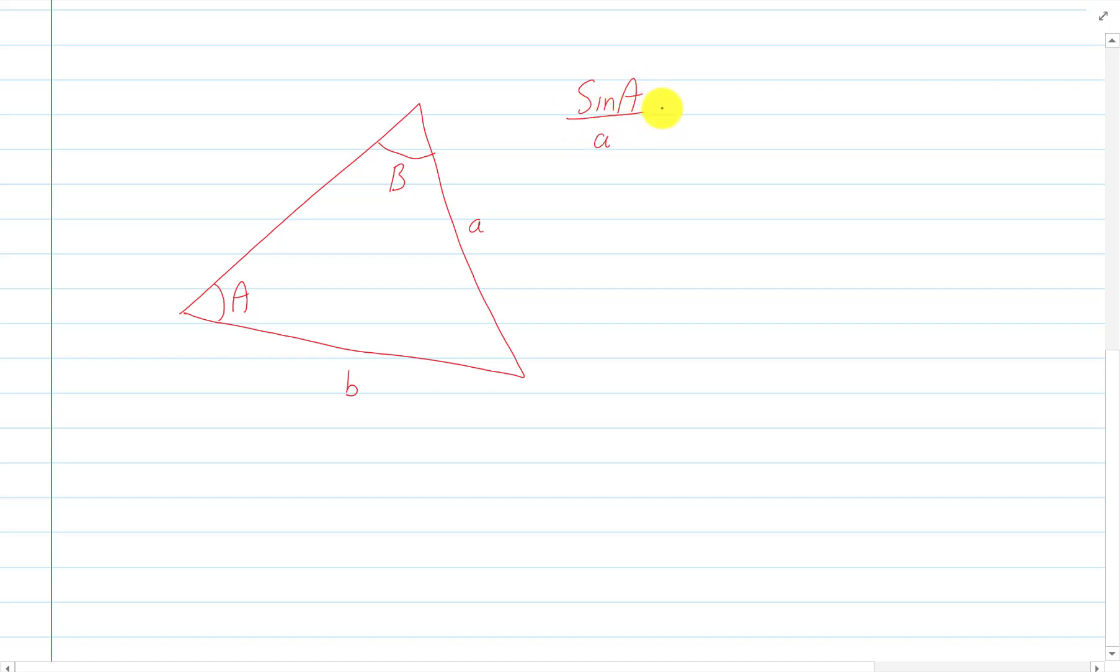We get that sine of a all over a is equal to the sine of b all over b. That's sine law, and we can also do c and c as well.